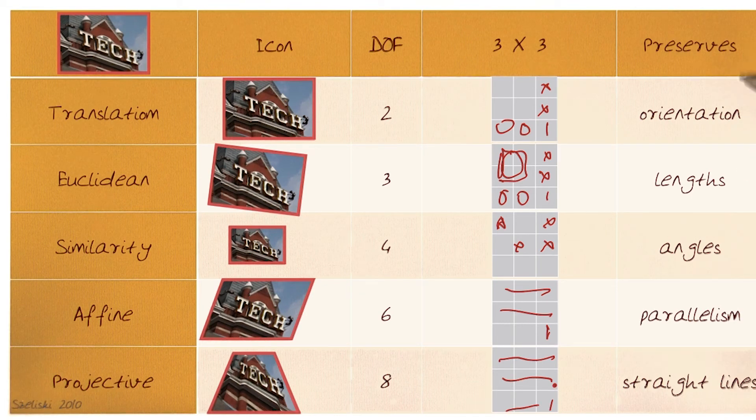So if you notice, as we go down, this preserves orientation, because it's only translation. This doesn't preserve orientation, but it preserves lengths. Next, all of the angles are preserved, parallel lines and lines are preserved, and only straight lines are preserved.